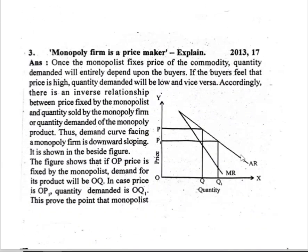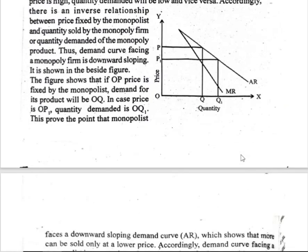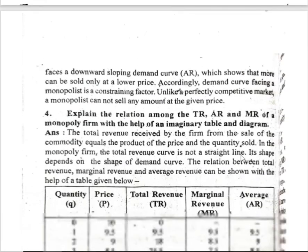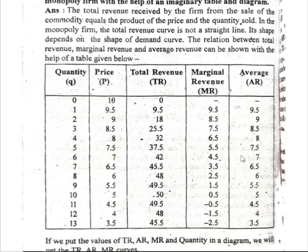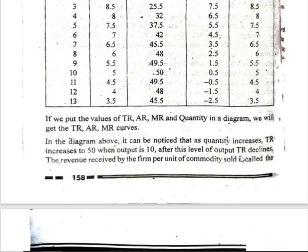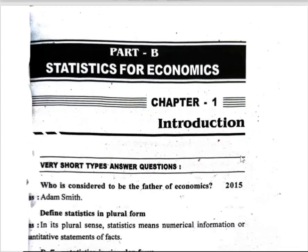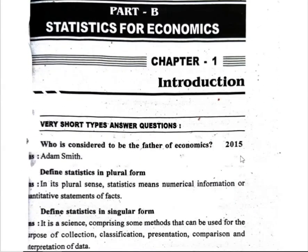Explain the monopoly firm as a price maker — this is very important. Explain TR, MR, and PR. Then Part B: statistics for economics.